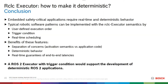In conclusion, in the embedded scope you have many safety-critical applications requiring real-time and deterministic behavior. We analyzed typical robotic software patterns that can be implemented by the RCLC executor, namely user-defined execution order, the trigger condition, and real-time scheduling as a ROS2 API. The benefits are separation of concerns, explicit activation semantics not embedded in application code, deterministic behavior, and real-time guarantees of end-to-end latencies. The bottom line is that a ROS2 executor with a trigger condition would greatly support development of deterministic ROS2 applications.